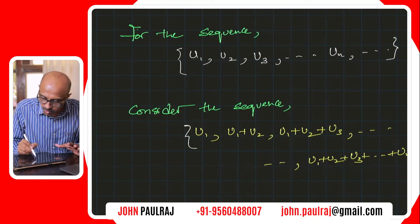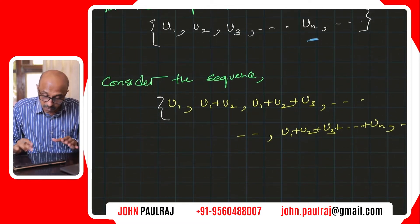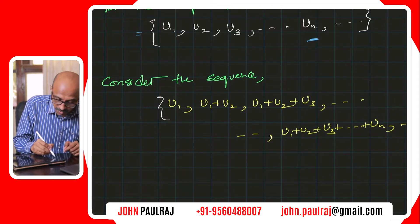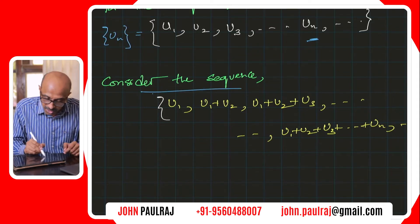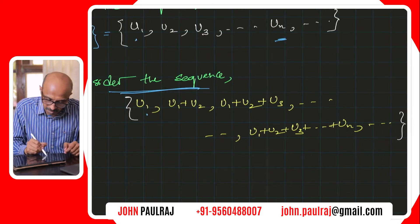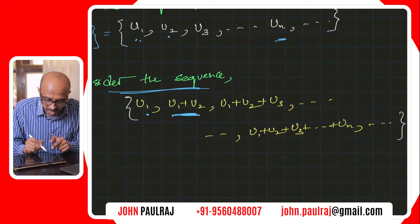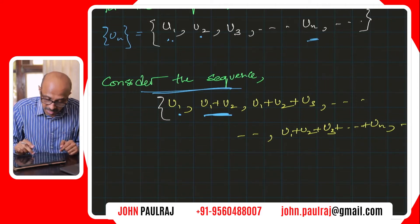For the sequence U1, U2, U3, and so on, with UN being the general term — if you consider a special sequence made out of the terms of that original sequence UN, this original sequence UN has a special sequence where the first term is the same, U1. The second term is U1 plus U2, adding up the first two terms. So the second term of this new sequence is the sum of the first two terms of the original sequence UN.